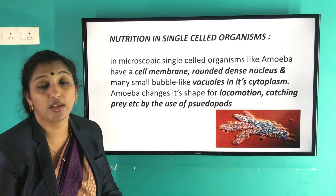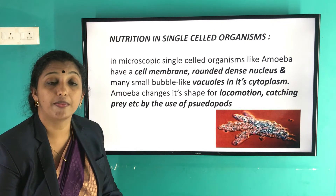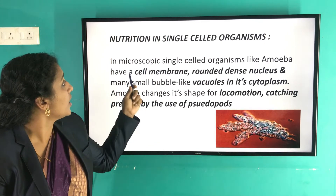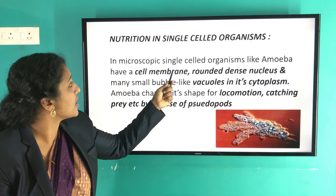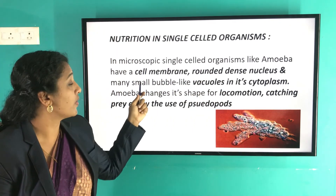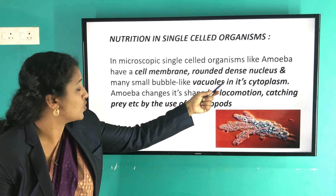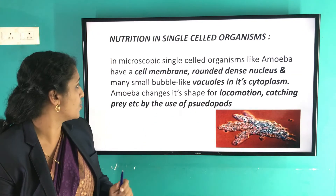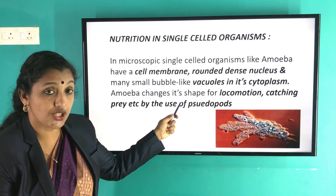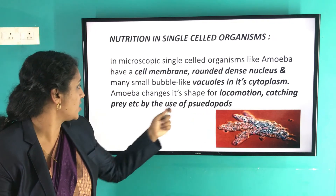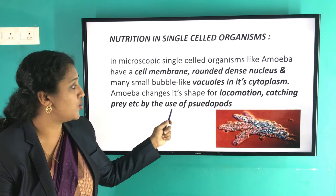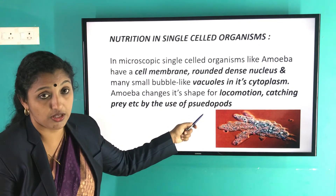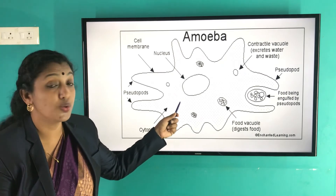The last topic is nutrition in amoeba. Amoeba is a unicellular eukaryotic organism. In microscopic single-celled organisms like amoeba, there is a cell membrane, a dense nucleus, and many small bubble-like vacuoles in the cytoplasm. Amoeba changes its shape for locomotion and catching prey using pseudopodia — meaning false feet.